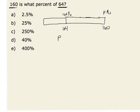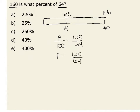One way to solve this is to set up a proportion: P over 100 is equivalent to 160 divided by 64. Therefore, our percent P would be given by 160 divided by 64 times 100.